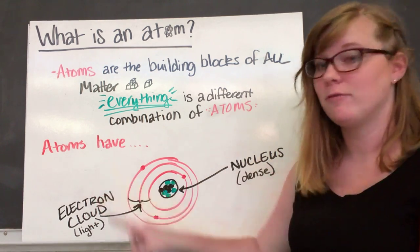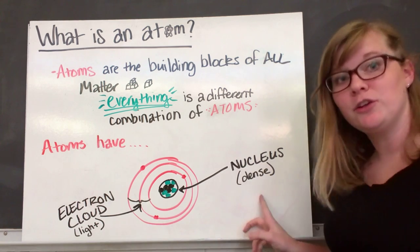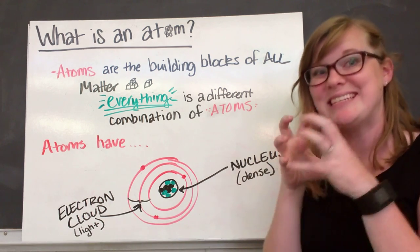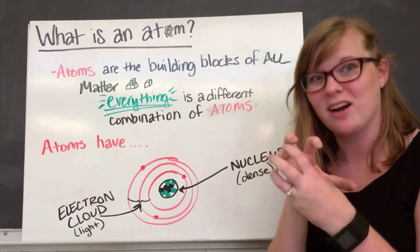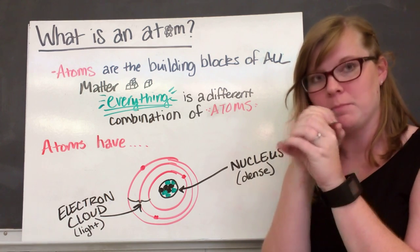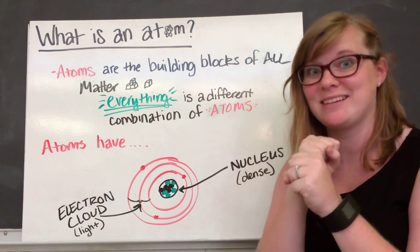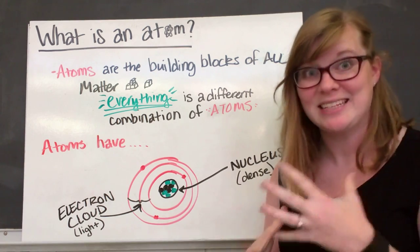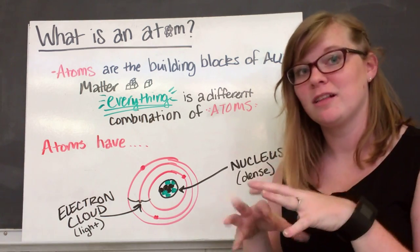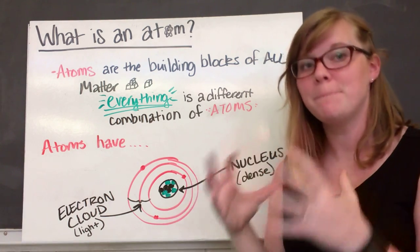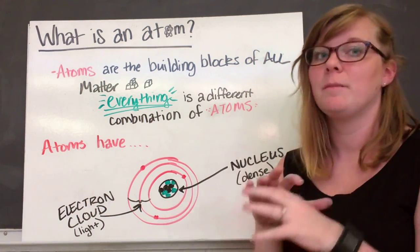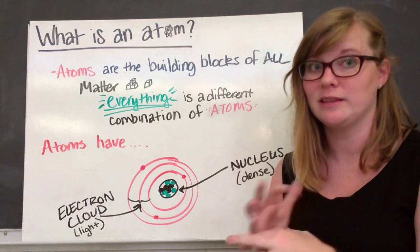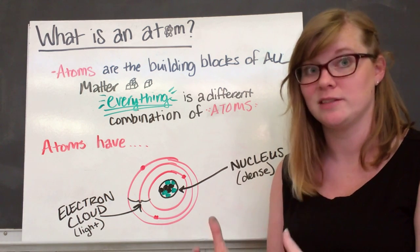Atoms have an electron cloud and a nucleus. The nucleus is the really dense, heavy center — it's a small part of the atom, but there's a lot of stuff in it. Versus the electron cloud, which is really light. Electron clouds are most of an atom, but they have way less stuff in them, which makes them really light compared to the dense nucleus.